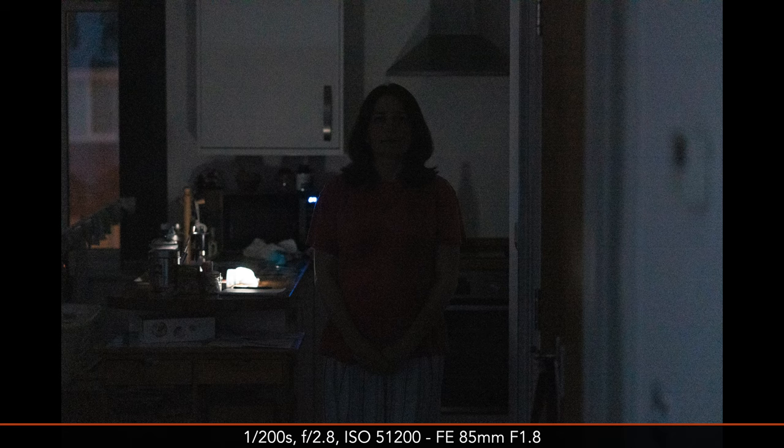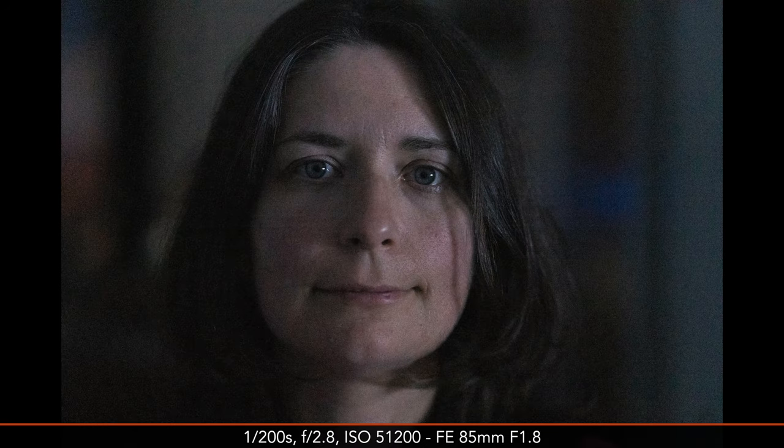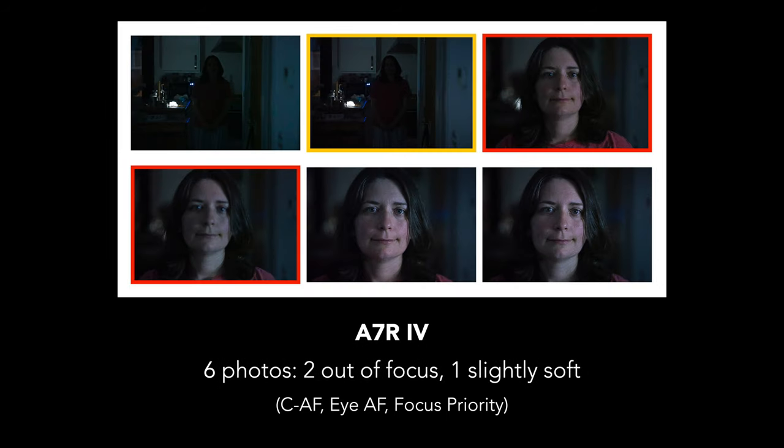Speaking of low light, here is a test in very difficult conditions using focus priority. The a7 IV managed to take a few shots at the beginning of the walk, although they were not always in focus, then it could not handle it until the subject was close to the camera where there was more light. The a7R IV couldn't follow the walk at all — it only took two pictures at the beginning and then couldn't focus until the very end.